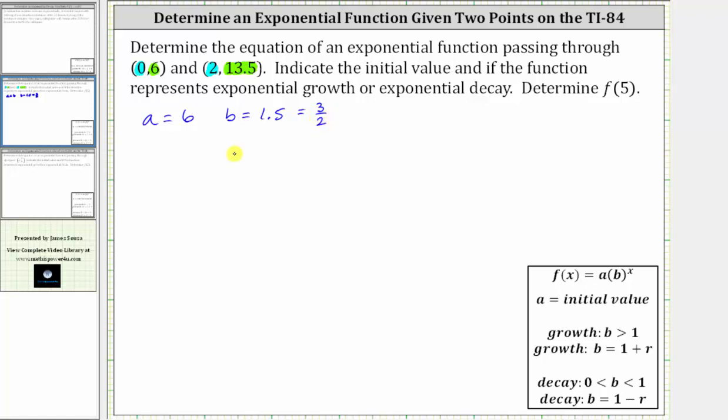So it doesn't matter whether we use the decimal or the fraction because both are exact. So our exponential function using function notation is f(x) equals a, which is 6, times b, which is—I'm going to use 3/2—raised to the power of x.